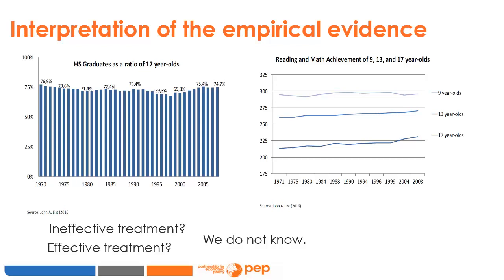There are two ways to interpret this empirical evidence: a pessimistic way and an optimistic way. The pessimistic approach highlights the fact that there has been no improvement in the percentage of high school graduates and no improvement in standardized test scores, even though the policy recommendations were implemented — suggesting the policies were ineffective. The optimistic approach, on the other hand, says it was a great choice to follow the recommendations. Imagine a steep downward slope that would have been observed had the US not invested so much in education. Thanks to the treatment, education outcomes were stabilized rather than deteriorated.